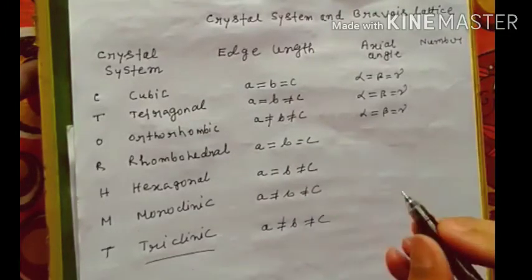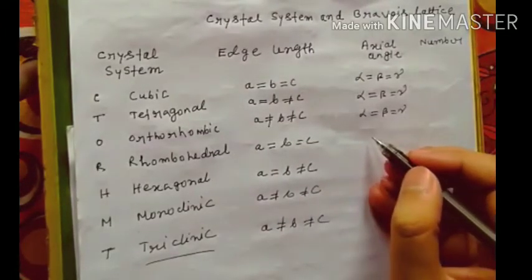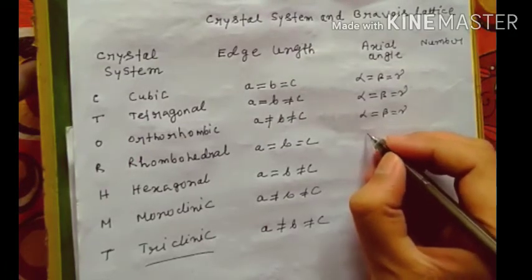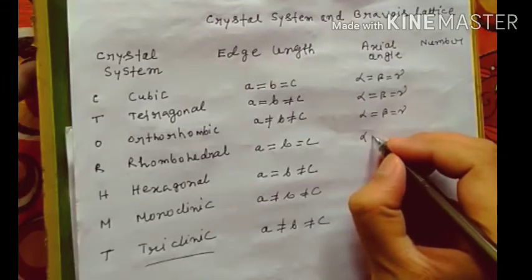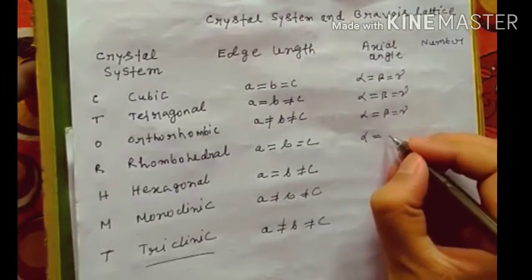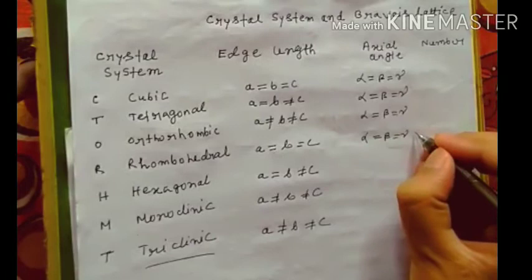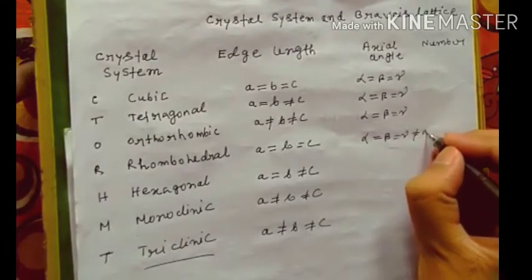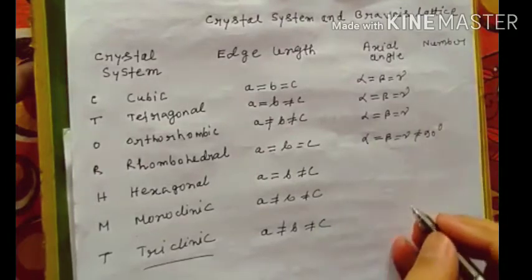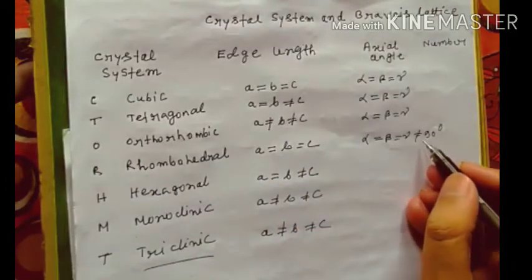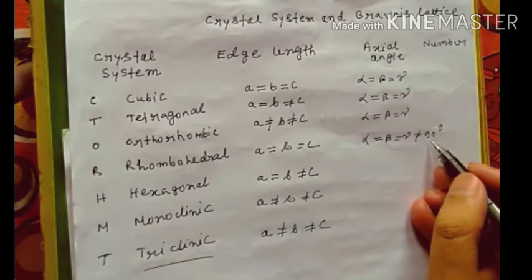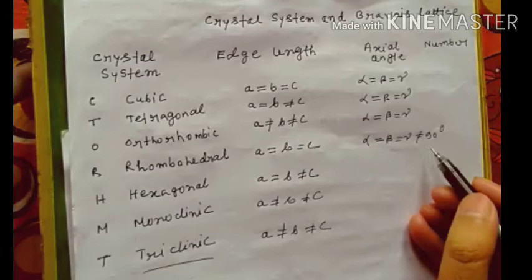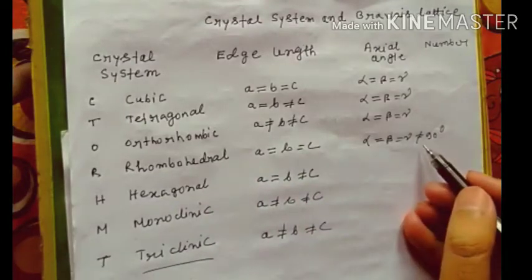Now here in rhombohedral, alpha equal to beta equal to gamma, but not equal to 90 degree. Rhombohedral angle is not equal to 90 degree. In rhombohedral, angle is not equal to 90 degree, so we can remember this way.